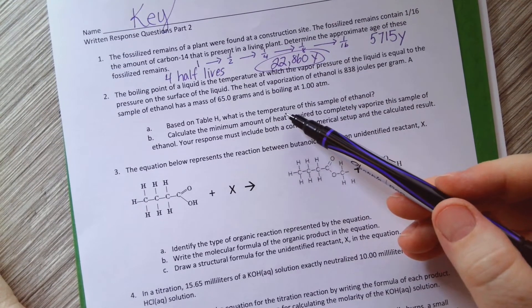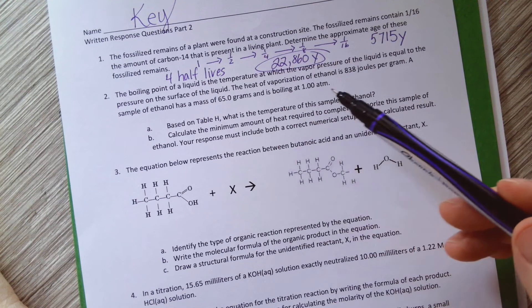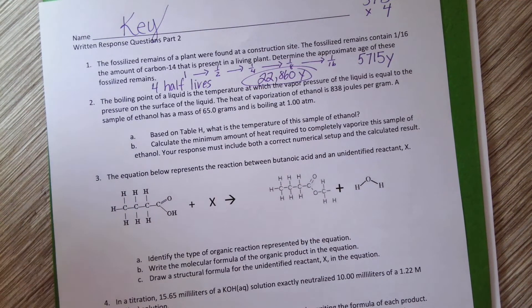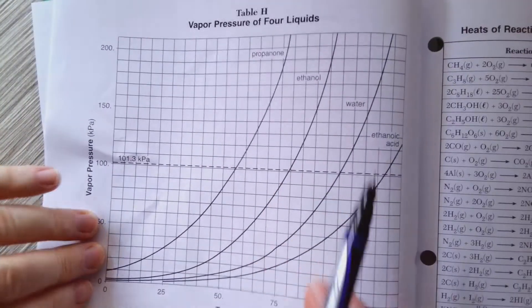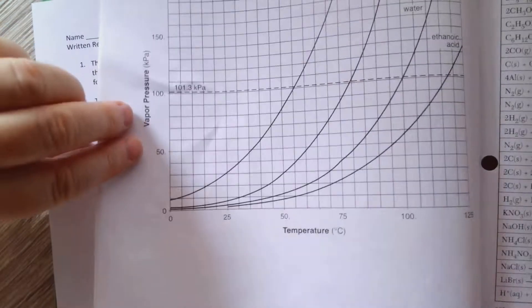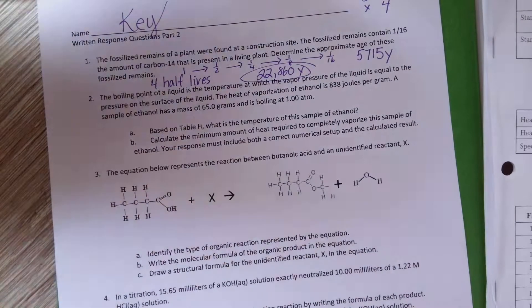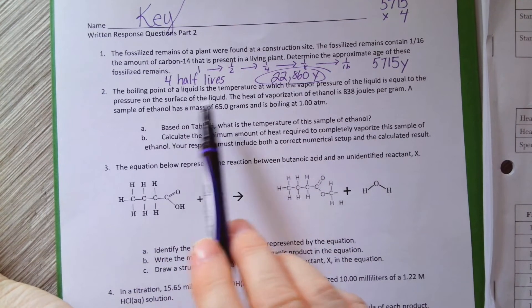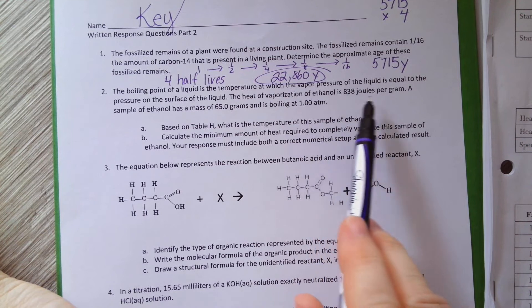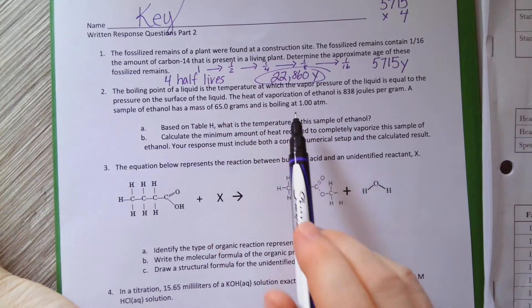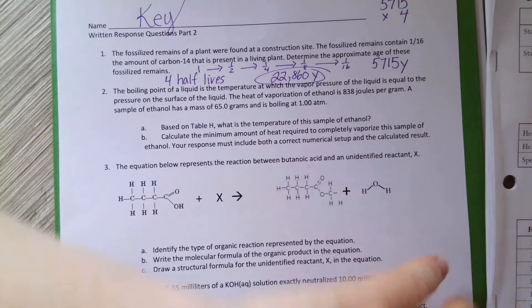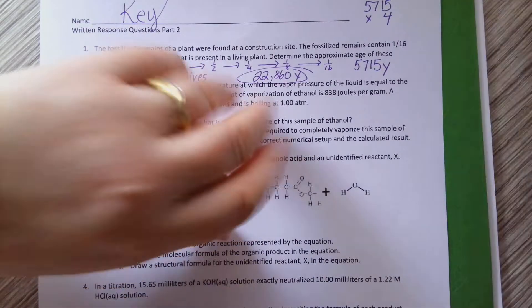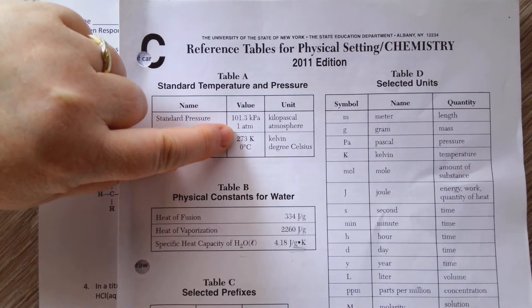Alright, so I'm going to skip the reading, go to the question. Based on table H, what is the temperature of the sample of ethanol? Okay, so I know I need table H. So let's look real quick at table H. Okay, I've got ethanol. And it said what is the temperature? So I'm trying to find the temperature. I need the vapor pressure. So let's go back to the question.